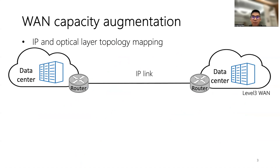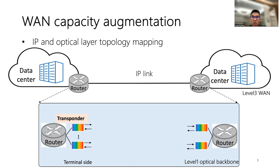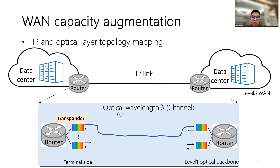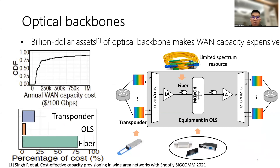Let me give a simplified example. Assume we have a layer-3 IP link between two data center sites. Right after the router port, there is a terminal device called an optical transponder that converts the signal from the electrical domain to an optical wavelength. The signal is transmitted through the optical line system via mux, which feeds into the fiber cable. Each wavelength occupies a specific spectrum in the fiber. However, long-haul WAN capacity is expensive, with fiber, transponders, and optical line system equipment being key contributors.